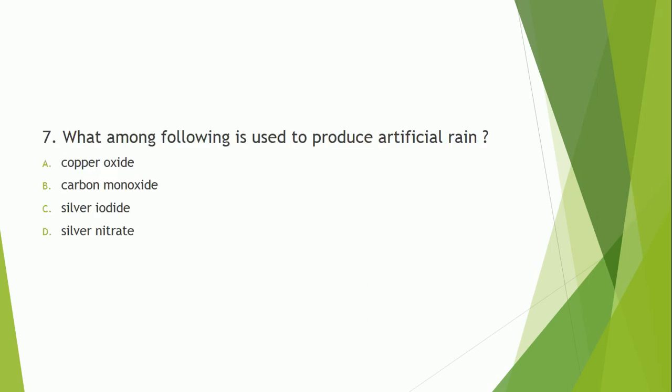Question number 7: What among the following is used to produce artificial rain? The correct answer is option C — silver iodide is used to produce artificial rain.